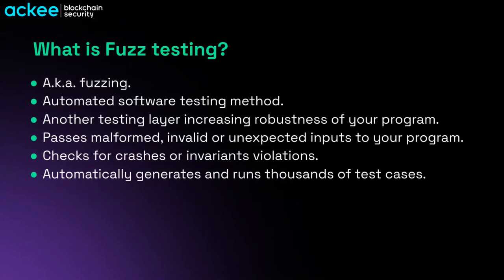Fuzz testing is also known as simply fuzzing, and it is an automated software testing method that adds another layer to your testing. Unfortunately it also does not guarantee you will have no bugs in your software, but it increases the robustness of your program. The principle is that the fuzzer passes malformed, invalid, or unexpected inputs to your program and tries to crash it, or checks any violations on your invariants.